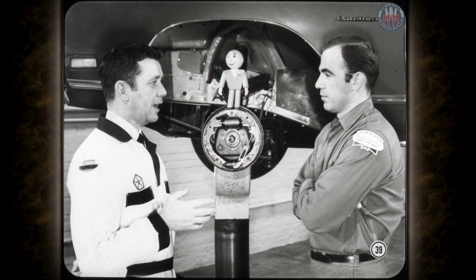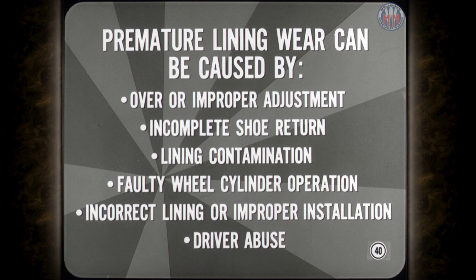Now it's time to talk about premature lining wear. Overheating can also get into the act, and you may find evidence of both conditions. Most of the causes are the same in front and rear, with the exception of parking brake conditions. Premature lining wear can be caused by over-adjustment or improper adjustment, incomplete shoe return, lining contamination, faulty wheel cylinder operation, incorrect lining or improper installation, or by driver abuse such as brake pedal riding.